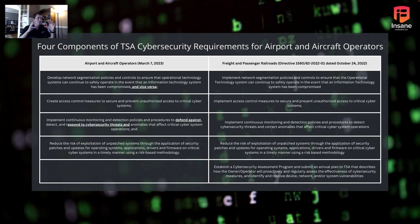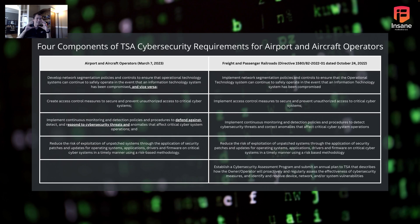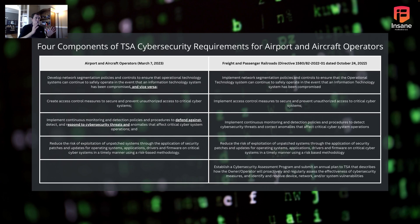We've bulleted and underlined the different portions for comparison. Back in October 2022, for freight and railroad passengers, the requirement said you have to segment the OT network — the cyber-physical operational network — from the IT network. That regulation was somewhat one-directional, whereas when you look at what was passed to airport and aircraft operators, the key difference is they added 'and vice versa.' So now you're looking for people jumping from OT to IT and IT to OT — recognition that attackers might start in OT and pivot, or vice versa.